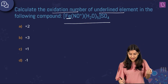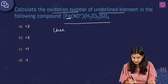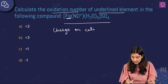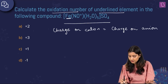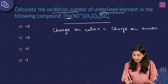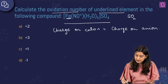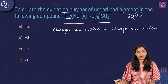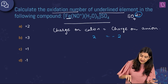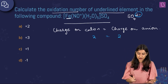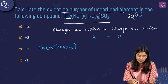The fundamental principle here is that the charge on the cation equals the charge on the anion in magnitude, since the overall species is neutral. The anion here is sulfate (SO₄), which exists as SO₄²⁻, so the charge on the anion is minus two. Therefore, the total charge on the cation — [Fe(NO)(H₂O)₅] — is plus two.